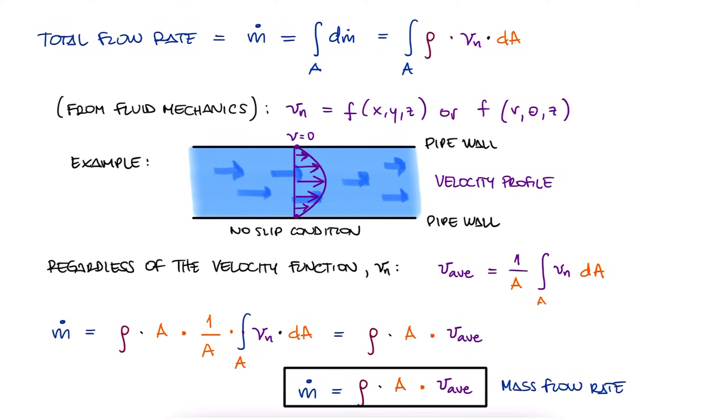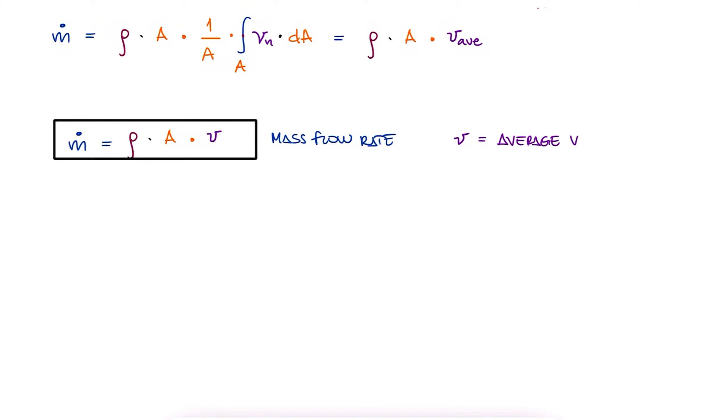And this is what we'll focus on in a thermal class. If we know the average velocity, which by the way will only be indicated simply as velocity, no average adjective before it, we use it directly with this expression to calculate the mass flow rate.